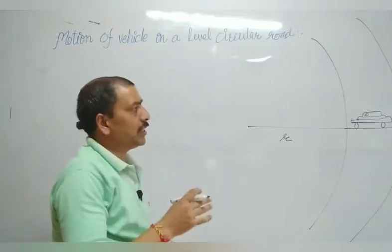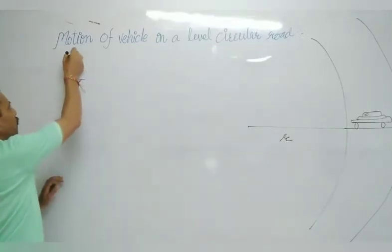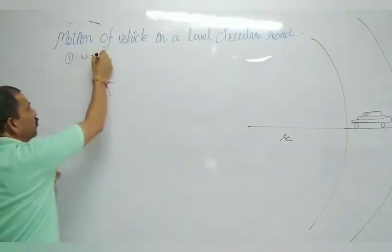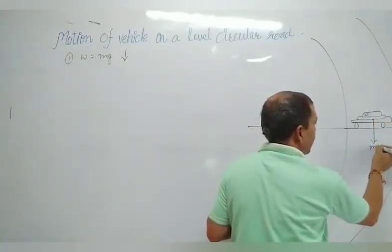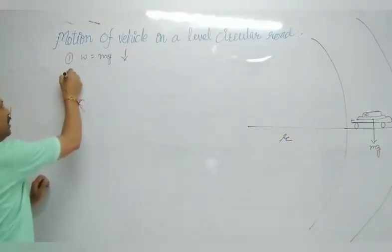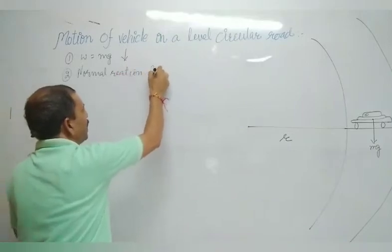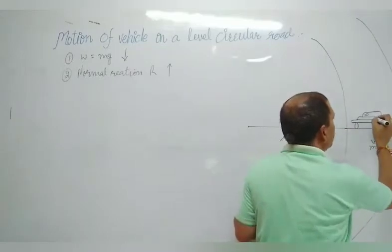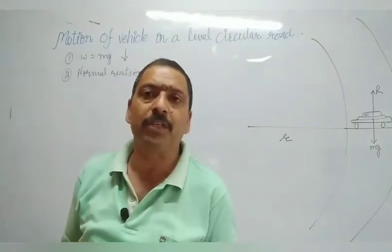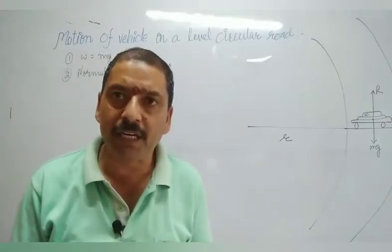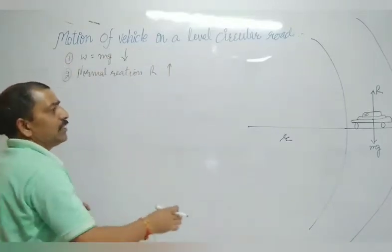This vehicle has velocity V. Now, three forces act on this vehicle: first, the weight which acts vertically downward; second, the normal reaction which acts perpendicular to the surface of the road in the upward direction; and third, the force of friction between the tires of the vehicle and the road, which provides the necessary centripetal force so that the vehicle does not skid away.